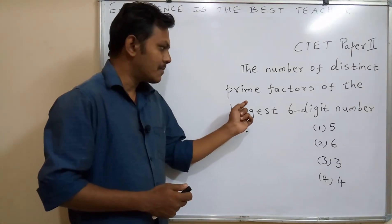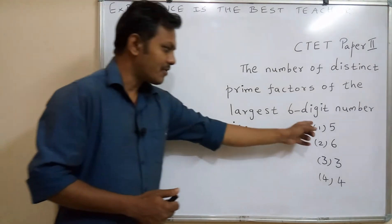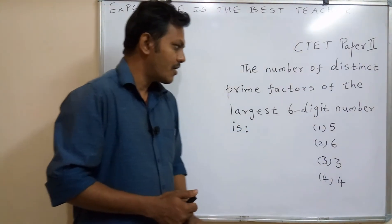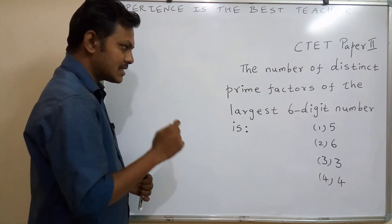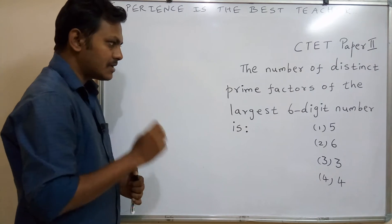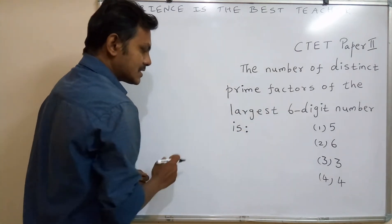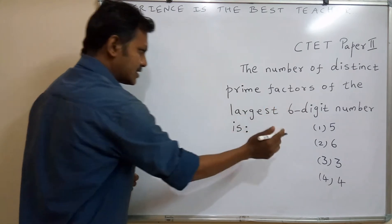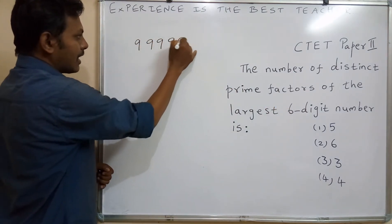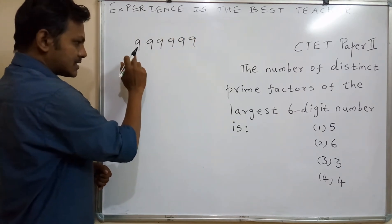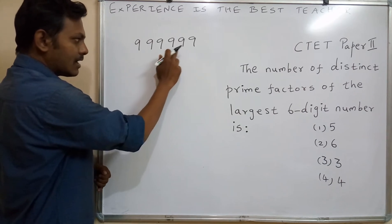The number of distinct prime factors of the largest six-digit number is what we need to find. The largest six-digit number is 9,99,999. We are going to find out the prime factors of this number and then determine the distinct prime factors.